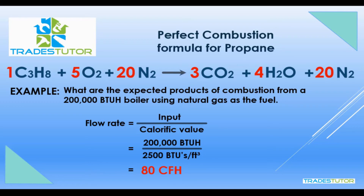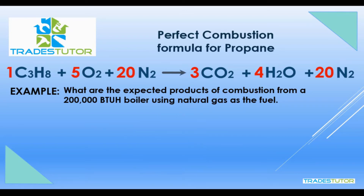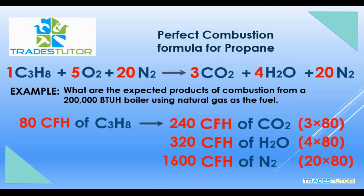Now we can use our ratio numbers to work with that. If you start with 80 cubic feet of propane and you get three times as much carbon dioxide, well, you get three times 80 — or 240 cubic feet. The water vapor is four times as much, or 320 cubic feet. And the nitrogen is 20 times as much, or 1,600 cubic feet. So that is the perfect combustion formula for propane, and we use that to calculate the products of combustion.